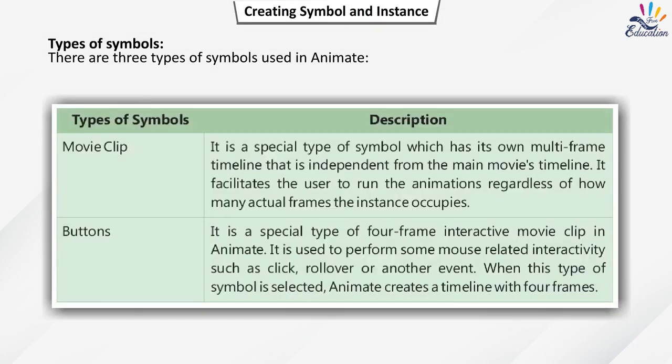There are three types of symbols in Animate. Movie Clip: a special type of symbol with its own multi-frame timeline independent from the main movie's timeline, allowing animations to run regardless of how many frames the instance occupies. Buttons: a special type of four-frame interactive movie clip used to perform mouse-related interactivity such as click, rollover, or another event. When a button symbol is selected, Animate creates a timeline with four frames.